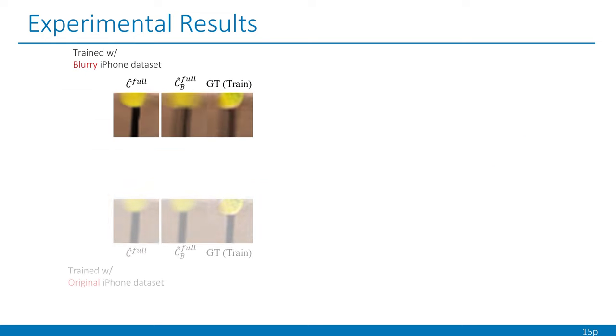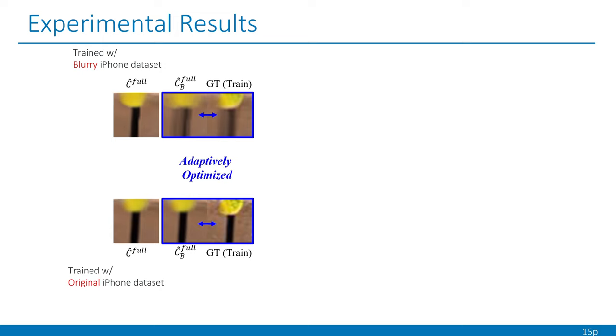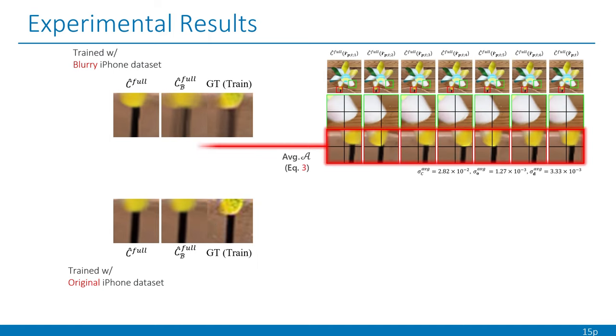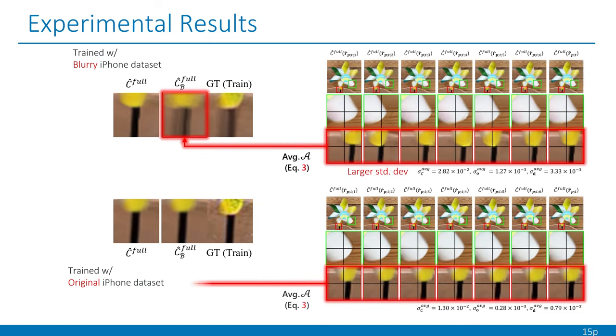To show the robustness of our DyBluRF against degrees of blurriness, we optimize DyBluRF with two datasets: the newly synthesized blurry iPhone dataset and the original iPhone dataset. We show the rendered color of the base ray with green boxes and the averaged rendered color with blue boxes. Also, we visualize each rendered color of latent sharp rays predicted by DyBluRF trained with each dataset. As shown, DyBluRF adaptively predicts latent rays to stably model the physical blur process, maintaining the sharpness of the base rays rendering color regardless of the degrees of blurriness in the training frames.